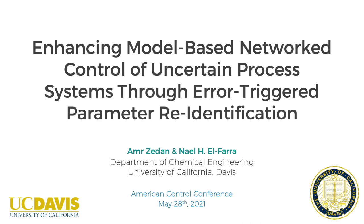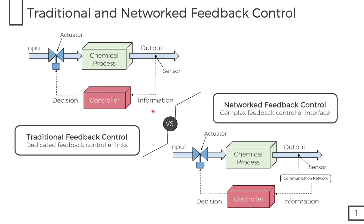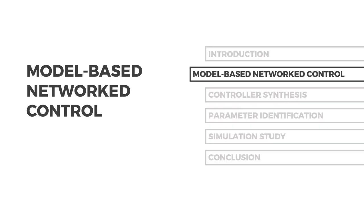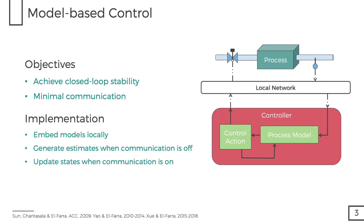Welcome to my talk on enhancing model-based networked control of uncertain process systems through error-triggered parameter re-identification. In traditional feedback control architectures, like the one in the figure on the left here, the interface between the controller and the process is through dedicated feedback control links. Recently, however, there has been a shift towards networked feedback control architectures, where the interface between the process and the controller has become more complex. The integration of networked feedback control has brought upon many opportunities and has enabled smart plant operations. However, it does come with challenges that have to be addressed. Now that there's a shared communication network, it is desirable to reduce network resource utilization, and to do that, minimal communication is required. On the other hand, optimal control performance requires frequent communication. Model-based control is one approach to address this challenge.